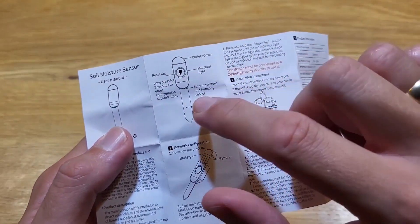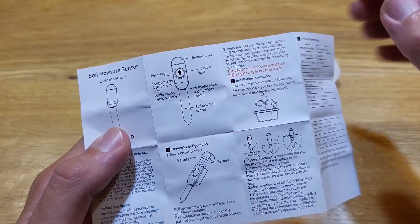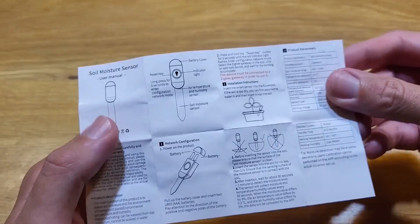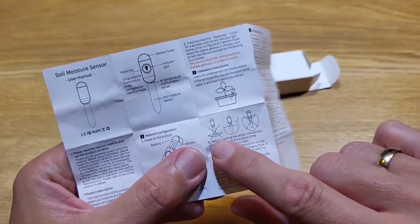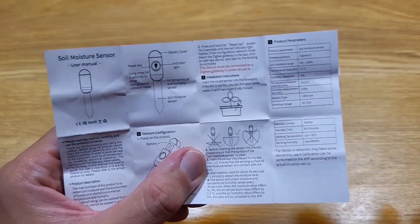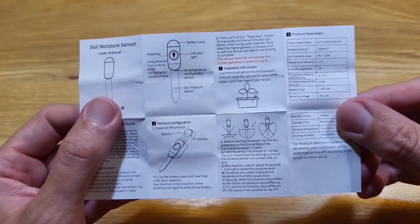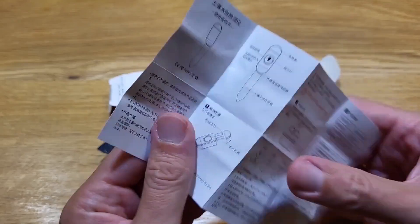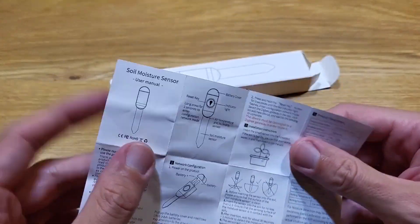Battery cover, reset button, indicator light - all that we've seen. Three seconds and the device goes to the pairing mode and how to insert it - I think it was already quite clear. There was a line under which we cannot go. From the other side it's the same but in Chinese.